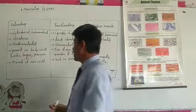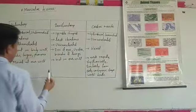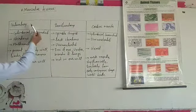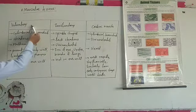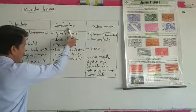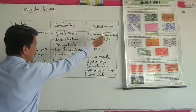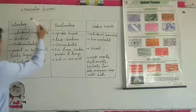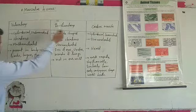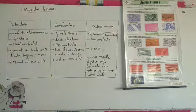In muscular tissue, we categorize mainly three types: voluntary muscles, involuntary muscles, and cardiac muscles.